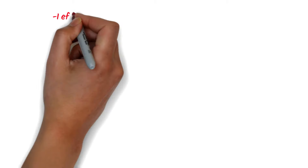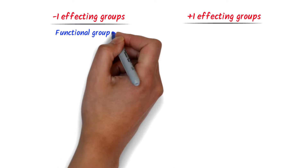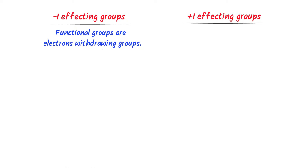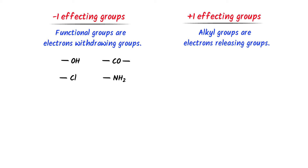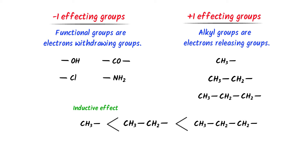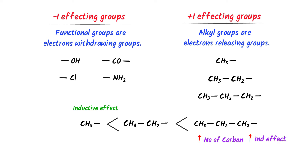Lastly, let me teach you negative I and positive I effecting groups. Remember that all functional groups are electron withdrawing groups — negative I groups — like OH, CO, Cl, NH2, CN, etc. On the other hand, all alkyl groups are electron releasing groups — positive I groups — like methyl, ethyl, propyl, etc. Also remember that methyl has less inductive effect than ethyl, and ethyl has less inductive effect than propyl. The easy trick is: the more the number of carbons, the more is the inductive effect.